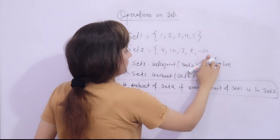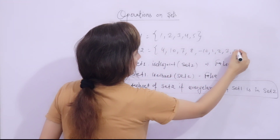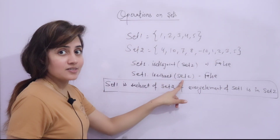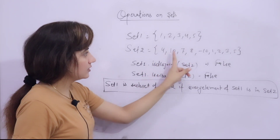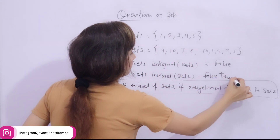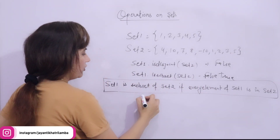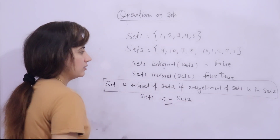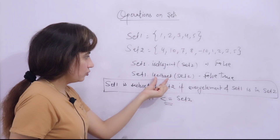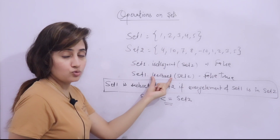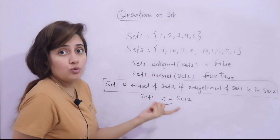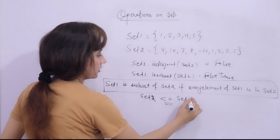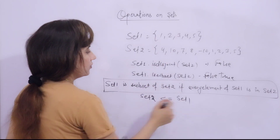If I update set one to contain only one, two, three, and five — elements that are all present in set two — then we can say set one is a subset of set two and issubset() will return true. For this check we also have the operator <=. So set one <= set two works the same as calling issubset(). Checking set two is a subset of set one returns false.